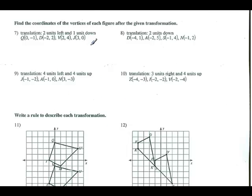Next section: find the coordinates of the vertices of each figure after the given transformation. Sometimes we don't have the actual picture or coordinate plane — we have to show or prove things mathematically. Just like I said in class, you can't build a building, have a tornado hit it, and say it didn't work — you have to prove it'll hold up before building it. So here I have my four points as the pre-image, and I need to find Q prime, D prime, V prime, and J prime.